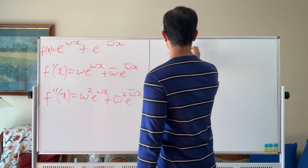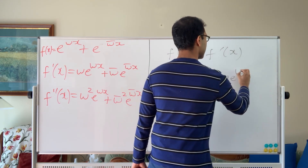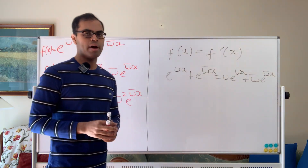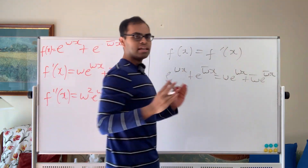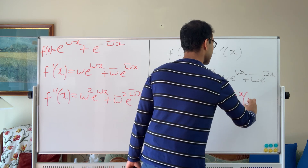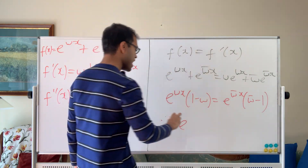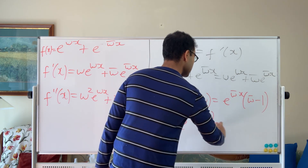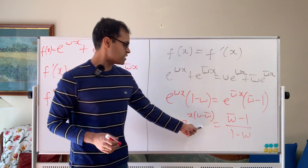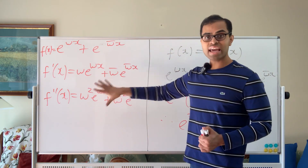To show f(x) ≠ f'(x): setting e^(ωx) + e^(ω̄x) = ω·e^(ωx) + ω̄·e^(ω̄x) and collecting like terms gives e^(ωx)·(1 − ω) = e^(ω̄x)·(ω̄ − 1). Rearranging, e^(x(ω − ω̄)) = (ω̄ − 1)/(1 − ω), which would have to be a constant function — but that cannot be the case. You can find an x where this doesn't hold. I want you to drop a comment with that x, and also explain why f''(x) ≠ f(x) using the same argument.